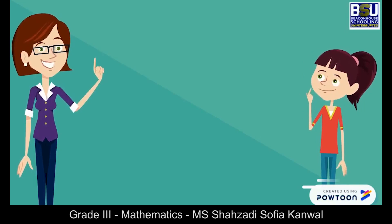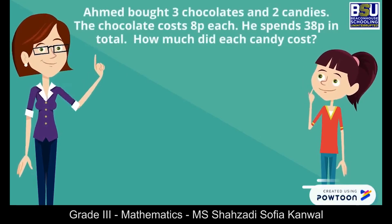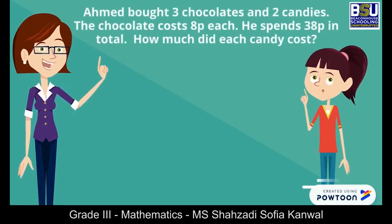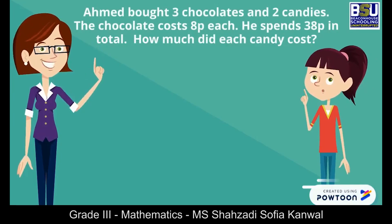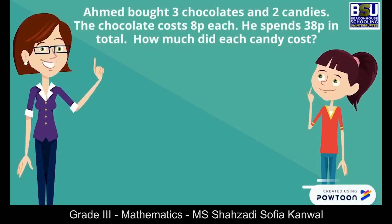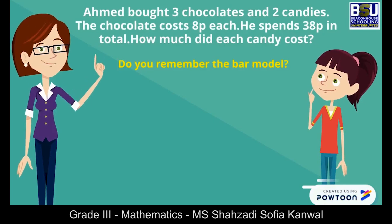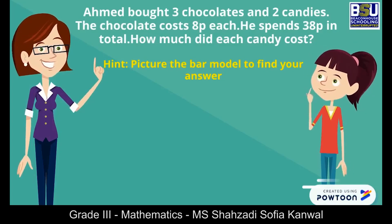Let's practice multiplication through an example. Eamon bought 3 chocolates and 2 candies. The chocolate cost 8 pence each and he spent 38 pence in total. How much did each candy cost? It's a really complicated question. Sara, do you remember the bar model? Yes, I remember it. Just picture the bar model to find your answer.